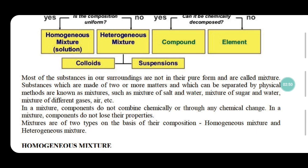Mixtures are of two types: homogeneous and heterogeneous. How can we identify a homogeneous mixture? A simple example: fill some water in a beaker and put some salt into this water. Stir the solution with a spoon. After 10 minutes, can you see the salt particles? It is very difficult — we could not view salt particles in the solution.